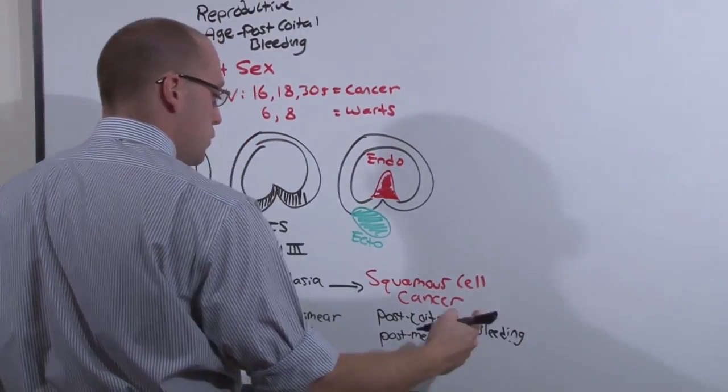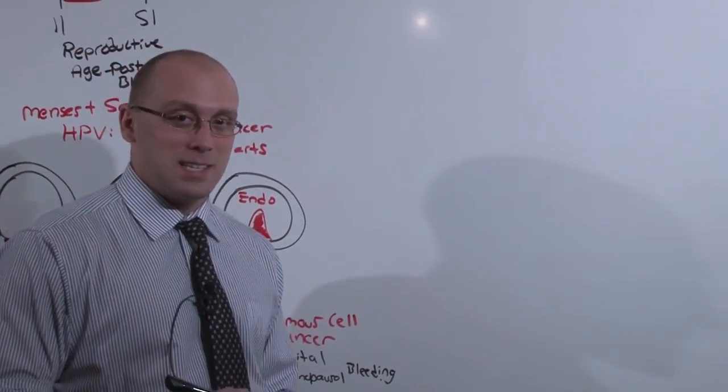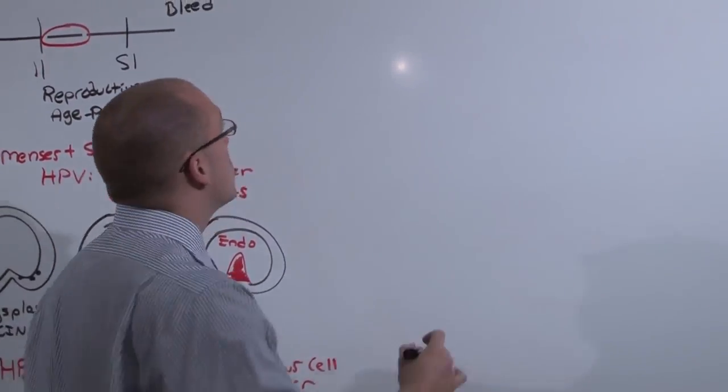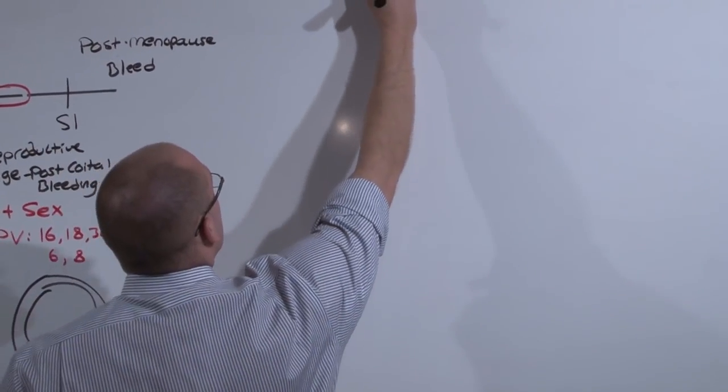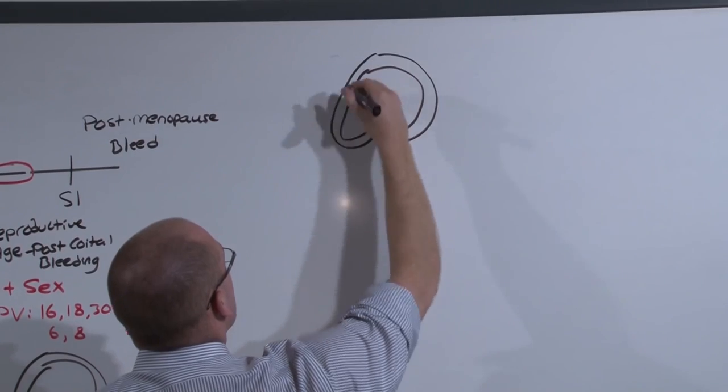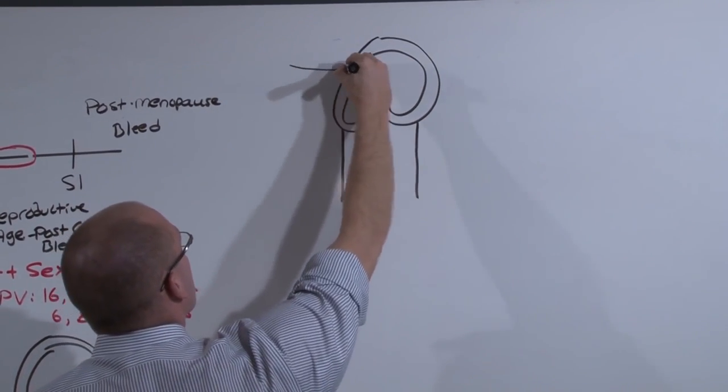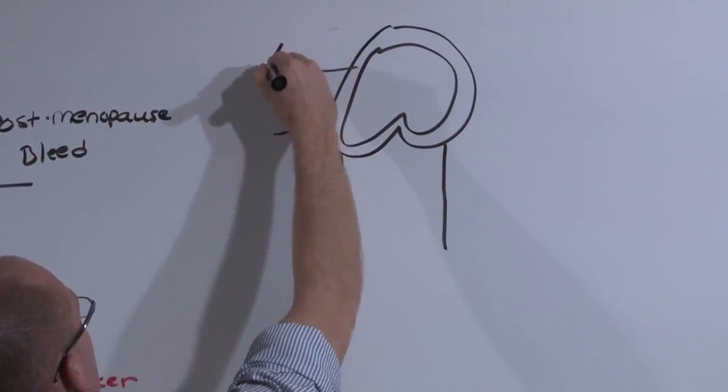Once you've diagnosed cancer, you have to stage it. Staging is done clinically, not surgically. Here again is the uterus, walls of the vagina, the cardinal ligament, and the pelvic sidewall.